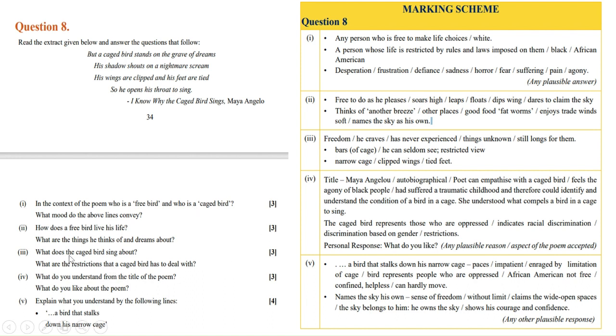What does the caged bird sing about? What are the restrictions that a caged bird has to deal with? The caged bird sings for freedom he craves and has never experienced, freedom of things unknown but still longs for. This means he sings for freedom because black Americans never experienced it, but they desire it. What are the restrictions? Bars of cage, he can seldom see, restricted view, narrow cage, clipped wings, tied feet.